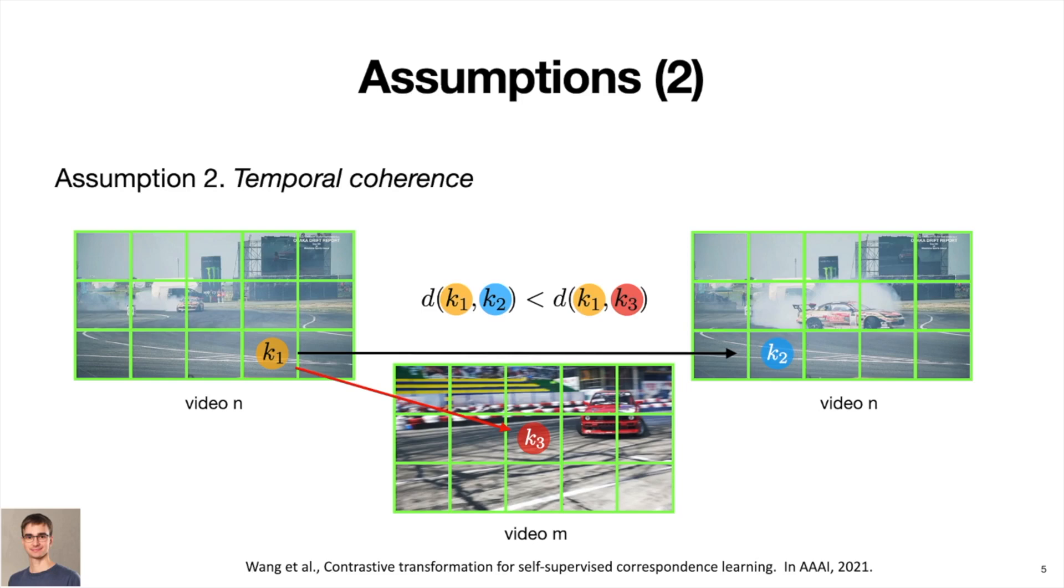Even though both examples here show racing car scenarios, the road surface is perceptibly distinguishable. Wang et al. relied on this assumption in their implementation of a contrastive learning framework.